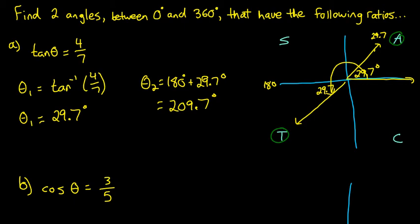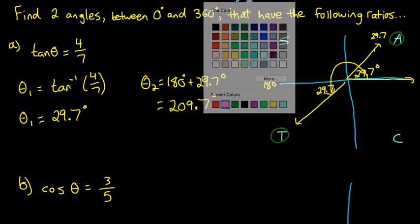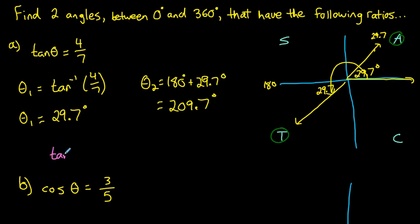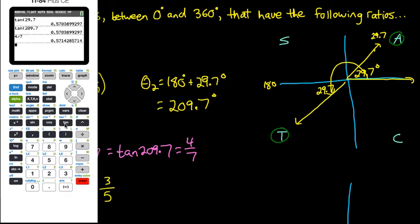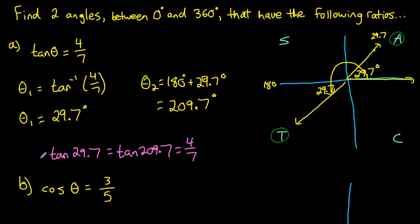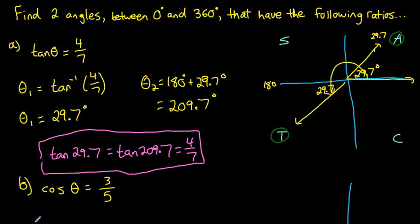So tan of 29.7 should have the exact same ratio as tan of 209.7, and both ratios should be about 4 over 7. We've done some rounding so it won't be exact, but let's double check. Tan of 29.7 has a ratio of about 0.57. Tan of 209.7 is the exact same ratio, and they're both very close to 4 over 7, which is also 0.57.